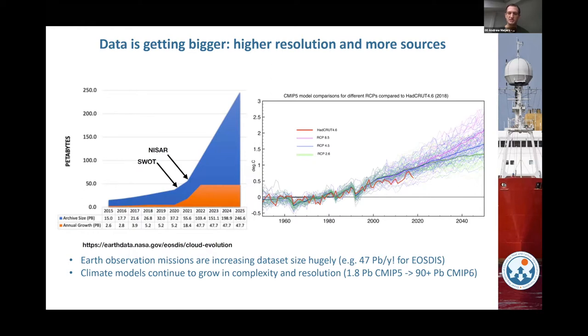CMIP5, which came out around eight years ago, was pushing two petabytes for all of its models. CMIP6, which was released last year, is over 90 petabytes. And if CMIP7, 8, 9 happen, we expect this will continue increasing in this dramatic fashion.